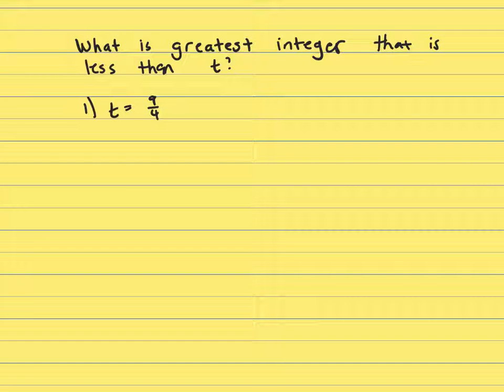What is the greatest integer that is less than t? Well, look at clue 1. t is 9 fourths, and that's 2 and 1 fourth.